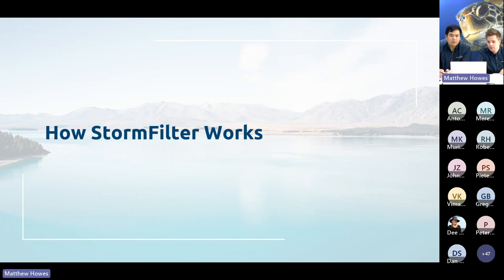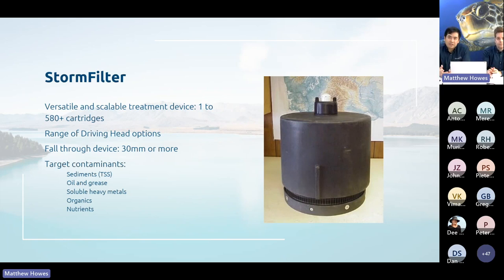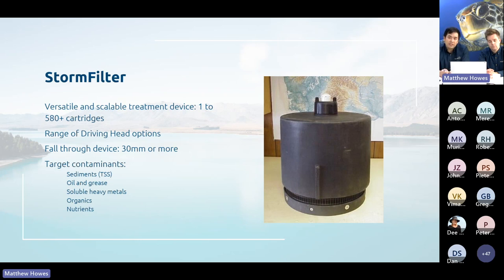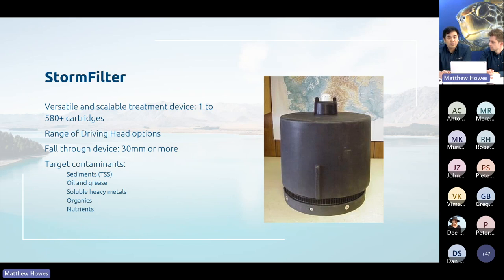Kevin explains: the Storm Filter is basically a siphon-activated cartridge system filled with media. It is versatile and scalable from a single cartridge in a car park or single house, all the way up to a 500-cartridge system treating 100 hectares of catchment. Cartridges come in a range of heights down to 350mm for sites with hydraulic restrictions, and the system can target different contaminants using different media — sediment, oil and grease, heavy metals whether particulate or dissolved, organics, and nutrients.